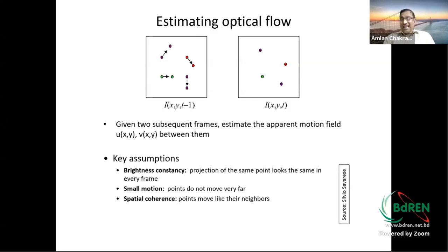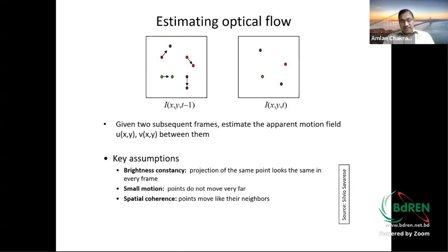We normally neglect small motion — these are special cases handled separately. Another assumption is small motion: if you have very high-speed motion, you require more frames per second. Video works well between 20–30 frames per second, but tracking fast objects may require 60–80 fps, making processing tedious. Spatial coherence assumes an object moves as a whole, rather than different parts moving in different directions, which is a further challenge.